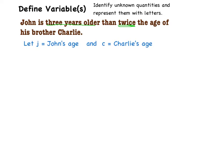I am going to write an equation that's going to compare the age of the two of them. So John's age, which we're calling j, is equal to three more than twice the age of his brother Charlie.